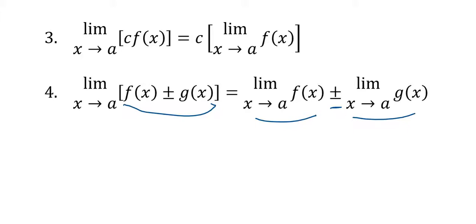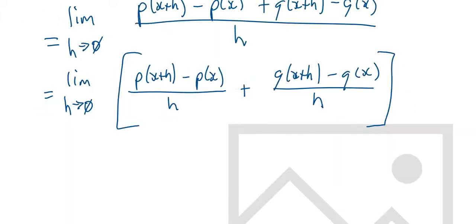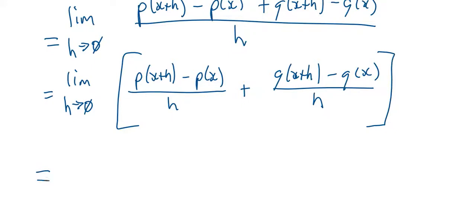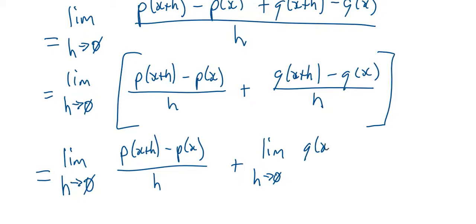The limit of the sum is equal to the sum of the limits, limit property four. You could memorize that it's limit property four, but you should think about what that means. Make sure you understand that. So that means I can write this, the limit as H approaches zero of P at X plus H minus P at X over H plus the limit as H approaches zero of Q at X plus H minus Q at X all over H.